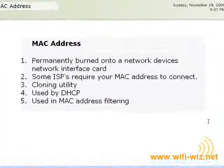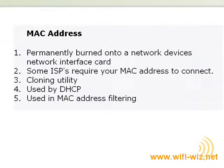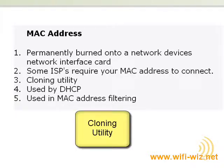Some internet service providers will require your computer's MAC address in order to enable your internet connection. A lot of times when you hook up a router to your home network, you will lose your internet connection to your ISP because the router has a different MAC address than your PC. So what routers will do is include what's called a cloning utility, which allows it to take on the MAC address of your PC, so it appears to your ISP that you're still running the same computer with the same MAC address.